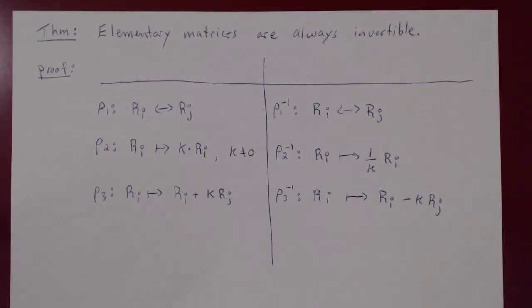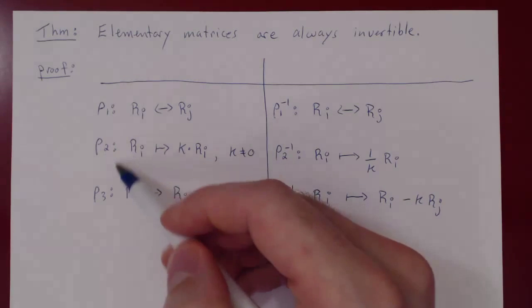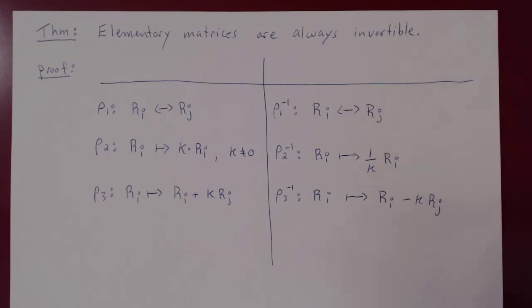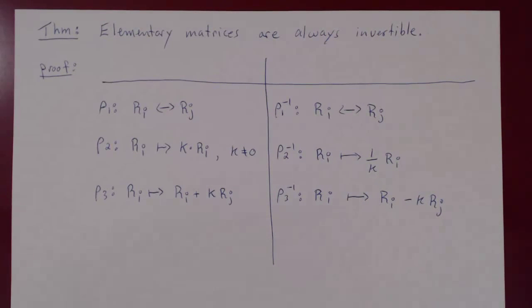And because every elementary matrix is constructed from one of these three row operations, each row operation is invertible. Therefore, every elementary matrix is invertible. That's it. Thank you.